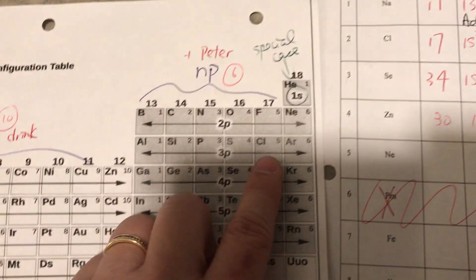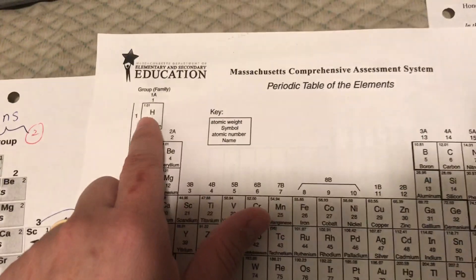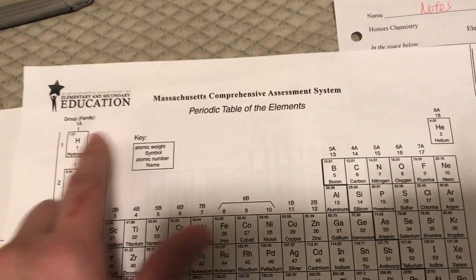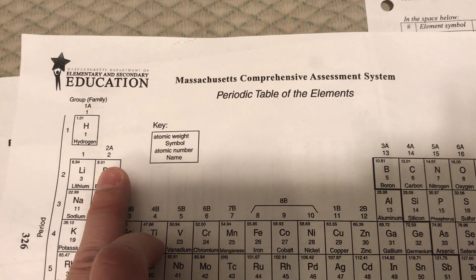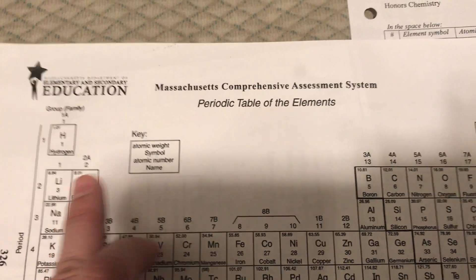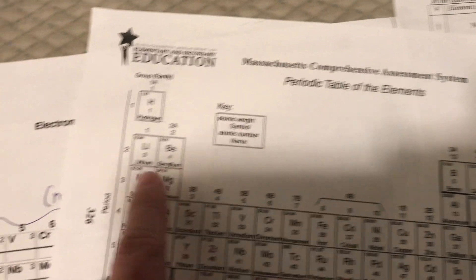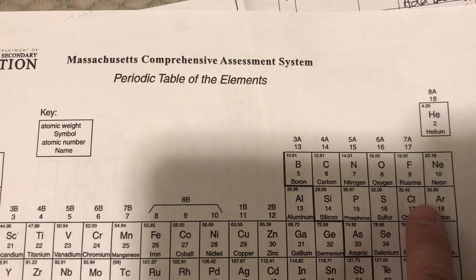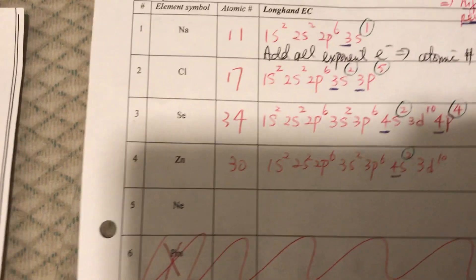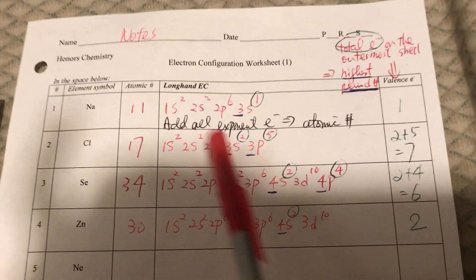Now let's do chlorine, which has atomic number 17. Reading from the periodic table: one s two, two s two — because this section is s and this section is p — so one s two, two s two, two p six, three s two, three p five — one, two, three, four, five.